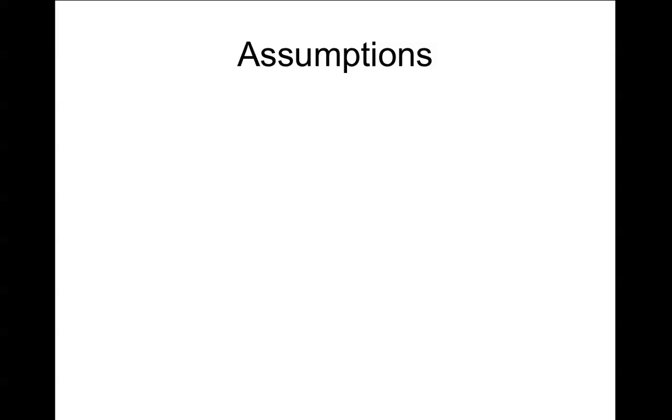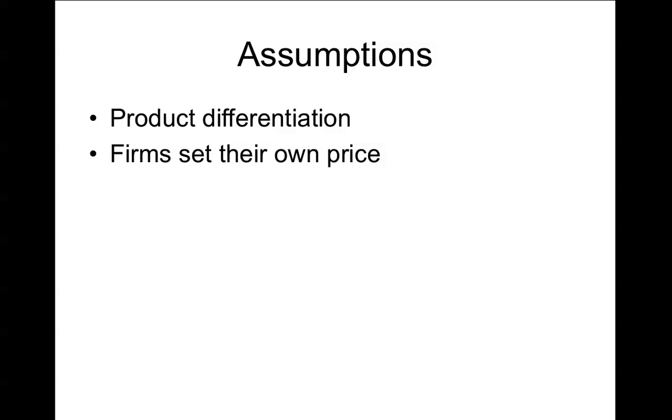Before we begin with the model itself, it's important that we revise the assumptions of this type of market condition. The first one is that there's product differentiation, which means that different firms have different products and that customers can tell the difference. The next one follows from the first: firms can set their own price. Because customers know the difference between the different products, they might form customer preferences, which means that firms are not going to lose all of their customers if they set a slightly higher price than their competitors.